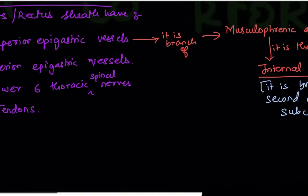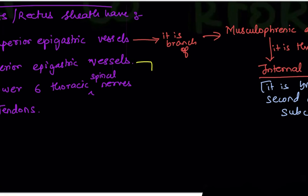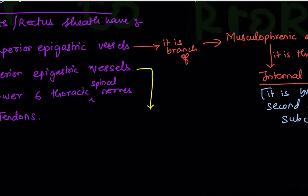One more extra point regarding the inferior epigastric vessel: it is a branch of the external iliac artery. The external iliac artery is a branch from the common iliac artery, which is formed by the bifurcation of the abdominal aorta.